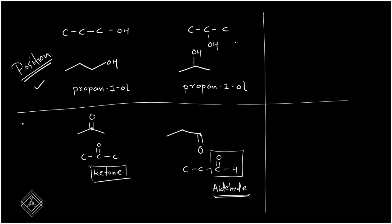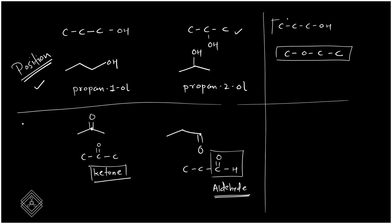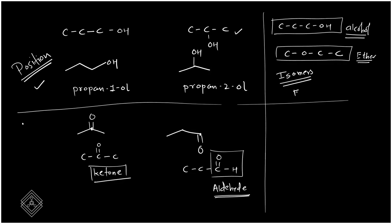Another example of functional group isomerism: 3 carbons with an OH group gives an alcohol, whereas 3 carbons with an oxygen bridging between carbons (C-O-C) gives an ether. Both have the same molecular formula but different functional groups, making them functional group isomers.